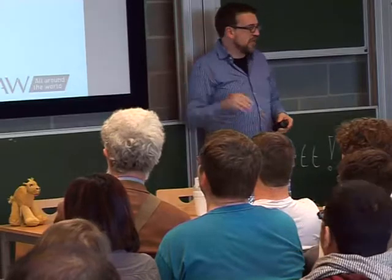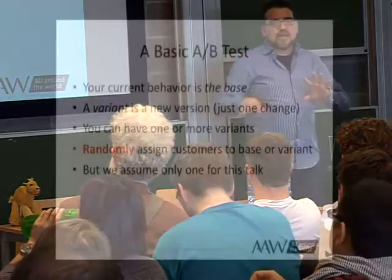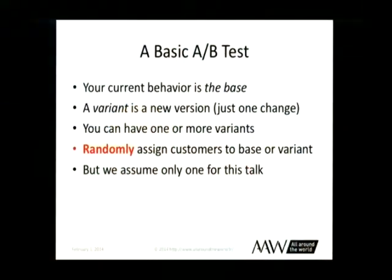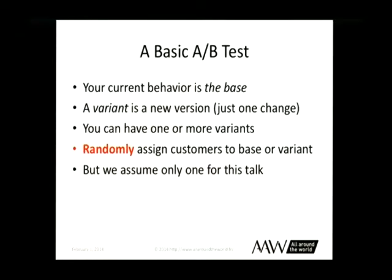A basic A/B test works kind of like this. Your current behavior is what we tend to call the base, and then you have some new behavior you're going to try out that we call a variant. You can have one or more variants in an experiment, but for the purposes of this we're just going to have one variant. You randomly assign customers to either the base or the variant.